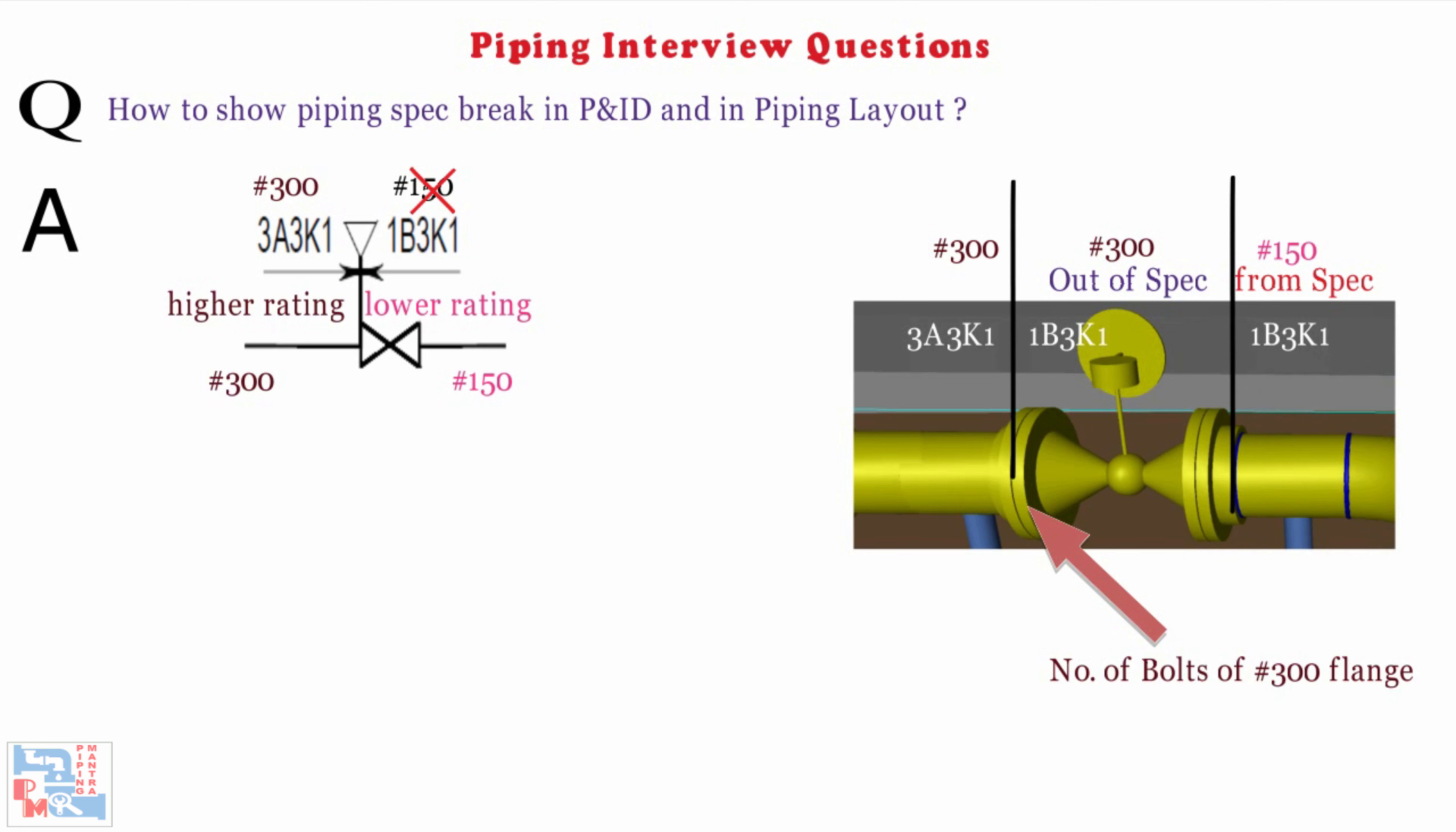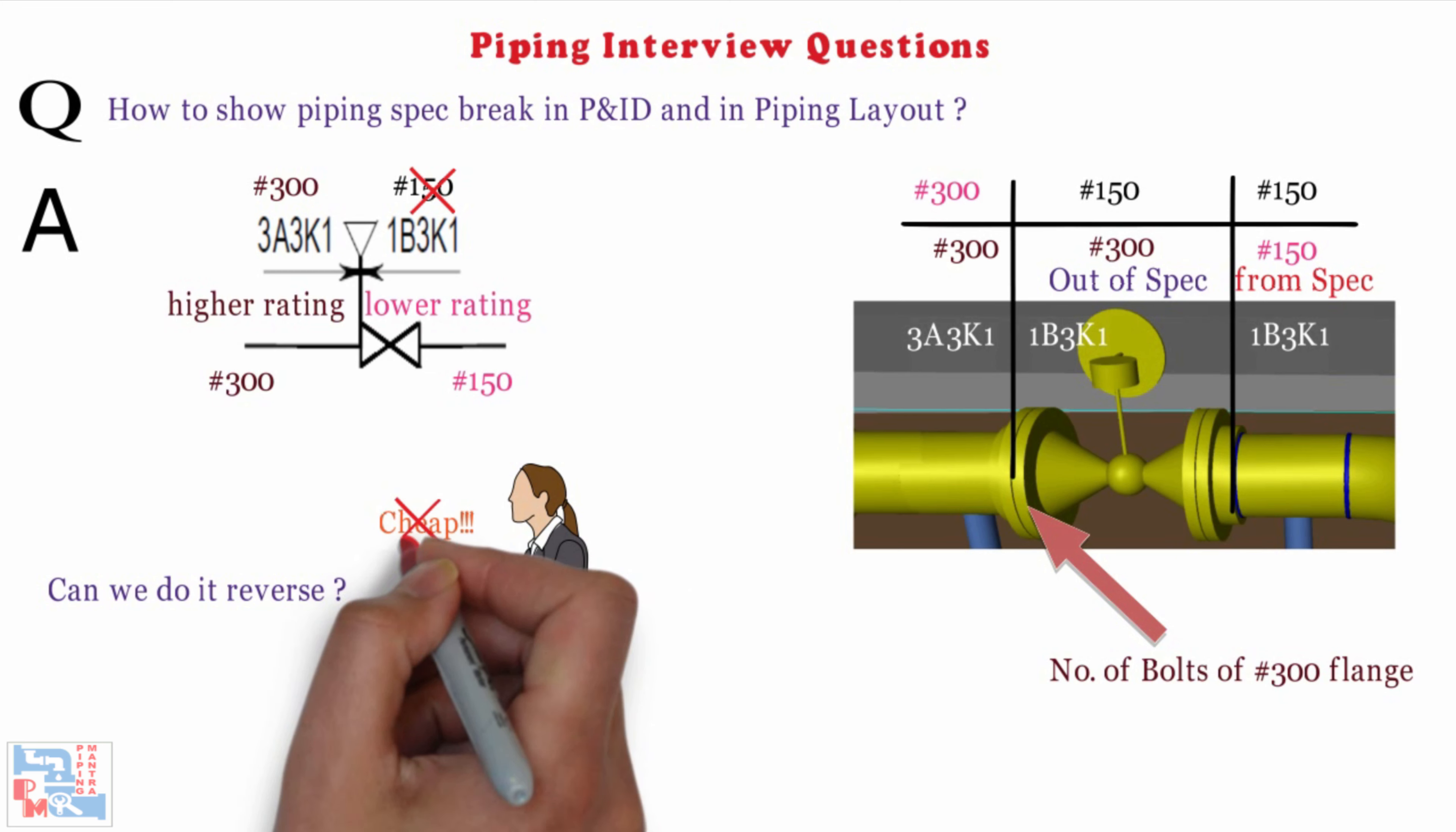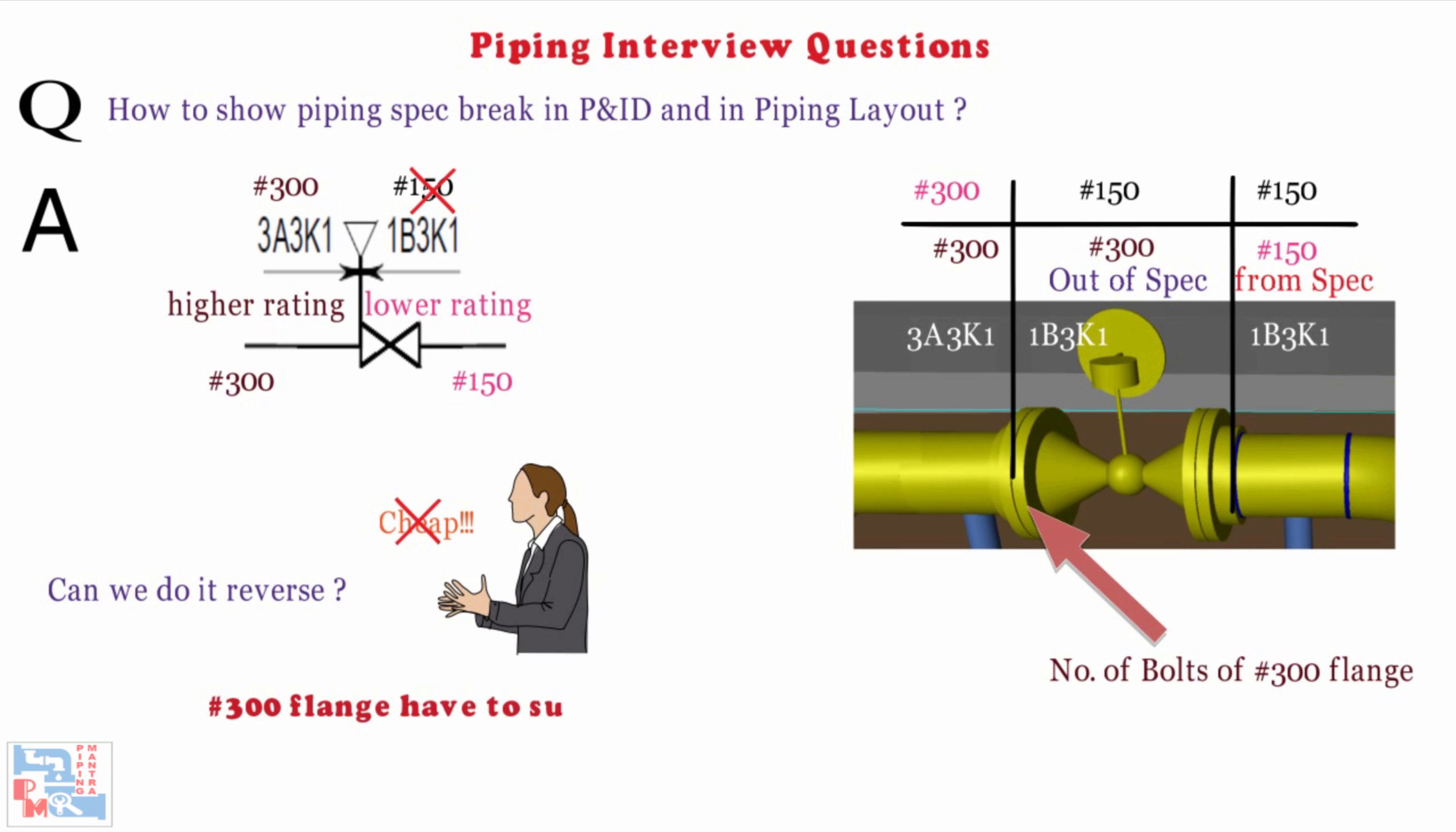There we will have one question arising that is, can we do it in reverse? I mean, all these two flanges and valves will be in 150 rating and that arrangement will be less costly. Technically, we can't do this because the connecting 300 rating flange have to sustain more pressure which can't be achieved by using 150 rating.